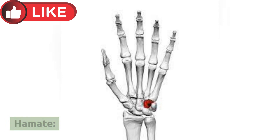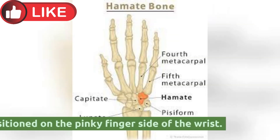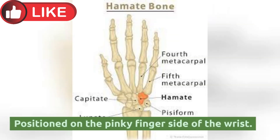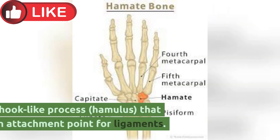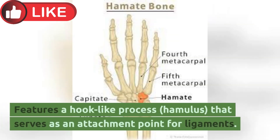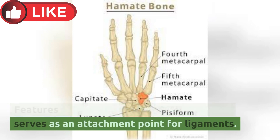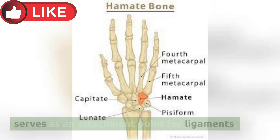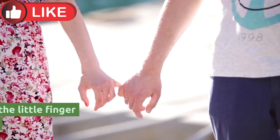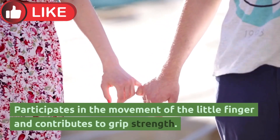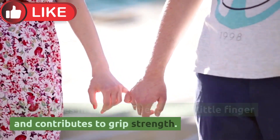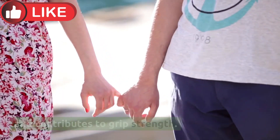Hamate: Positioned on the pinky finger side of the wrist. It features a hook-like process called the hamulus that serves as an attachment point for ligaments. It participates in the movement of the little finger and contributes to grip strength.